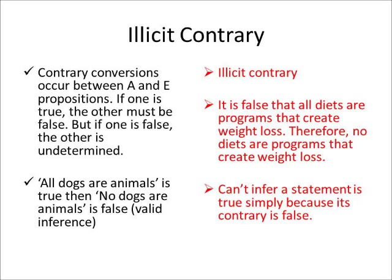But sometimes we make an illicit or invalid inference based on this contrary relation. For example: 'It is false that all diets are programs that create weight loss' — that's an A proposition we're saying is false — and then we're trying to infer from that that it's true that 'no diets are programs that create weight loss.' So we're saying since A is false, E must be true. But you can't do that with contraries, because when one contrary is false, we don't know the truth value of the other. So we can't infer a statement is true simply because its contrary is false. This is a fallacy — we call it the illicit contrary.